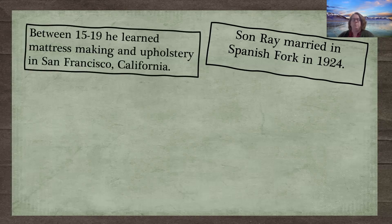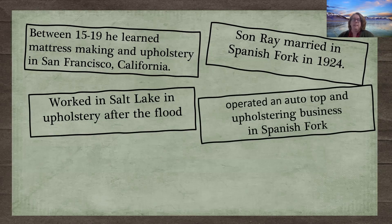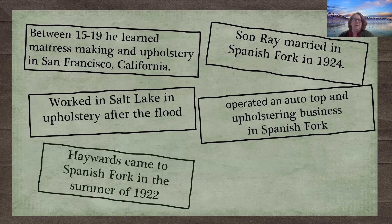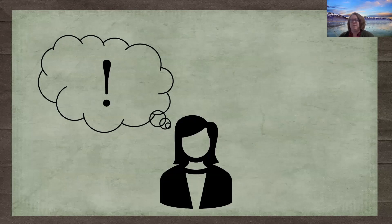Annis' history told me that my great-grandfather Charles learned mattress making and upholstery in San Francisco, California between the ages of 15 and 19, and that he worked in Salt Lake City in upholstery after the flood destroyed their farm. The obituary said that Charles operated an auto top and upholstering business in Spanish Fork. My grandmother's history about my grandfather stated that the Haywards came to Spanish Fork in the summer of 1922 and that Charles opened a shop making upholstery, auto tops, and side curtains. That kind of answered my initial research objective.